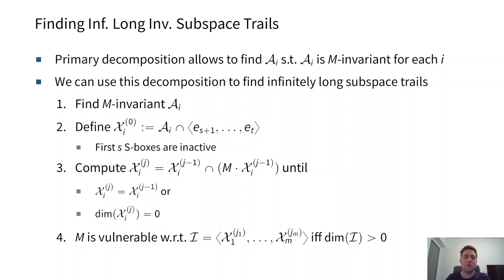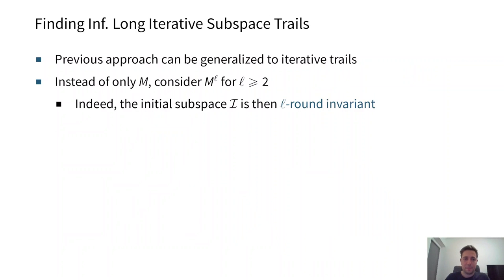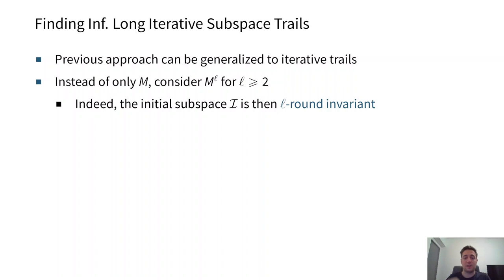This can also be generalized: if we want to find iterative trails, we just replace the matrix M by a power of it. The initial subspace IS is then L-round invariant.